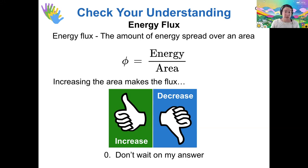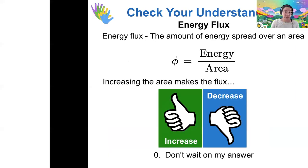So thinking back to our proportionality concept, looking at this equation, if you increase the area, what's going to happen to the flux phi?